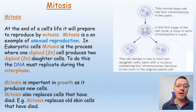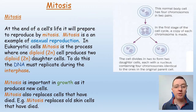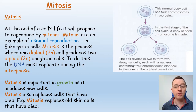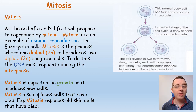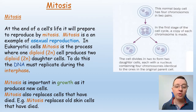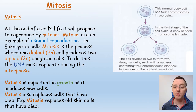At the end of a cell's life it will prepare to reproduce by mitosis. Mitosis is an example of asexual reproduction. In eukaryotic cells, mitosis is a process where one diploid (2n) cell produces two diploid (2n) daughter cells. To do this, the DNA must replicate during interphase. Mitosis is important in growth as it produces new cells, and it also replaces cells that have died, for example replacing old skin cells due to normal wear and tear.